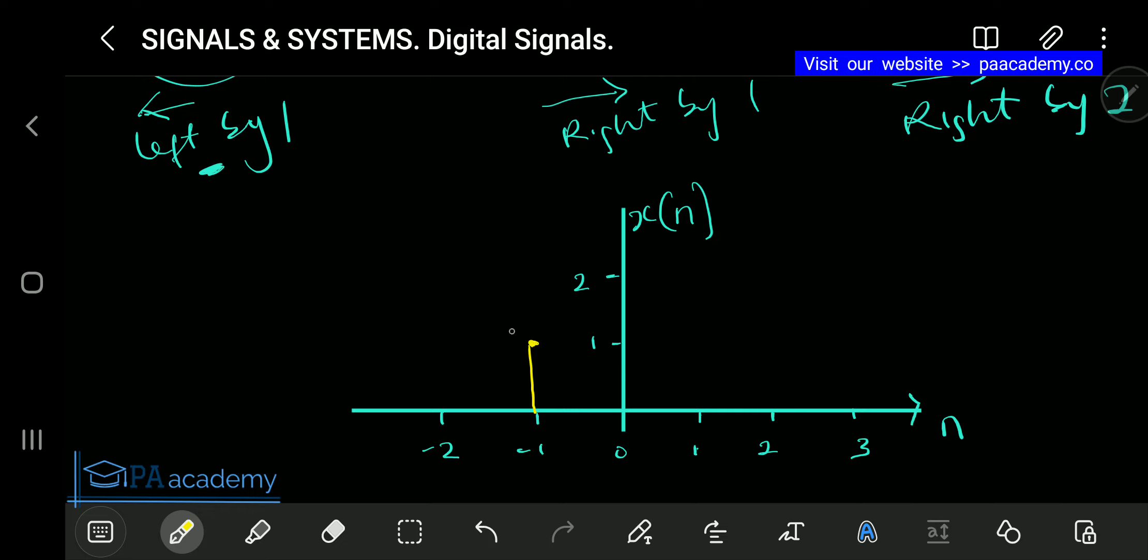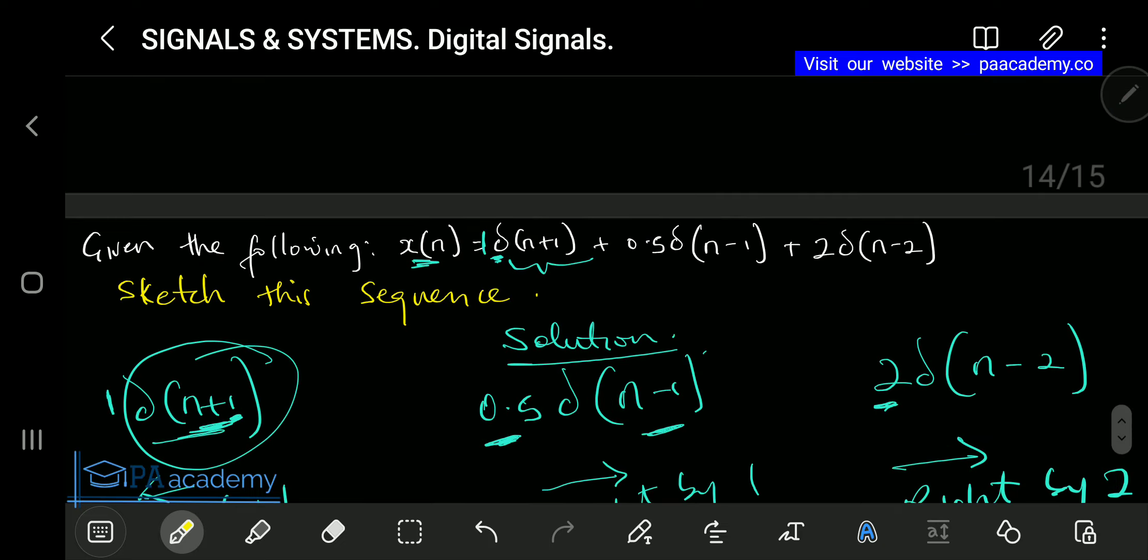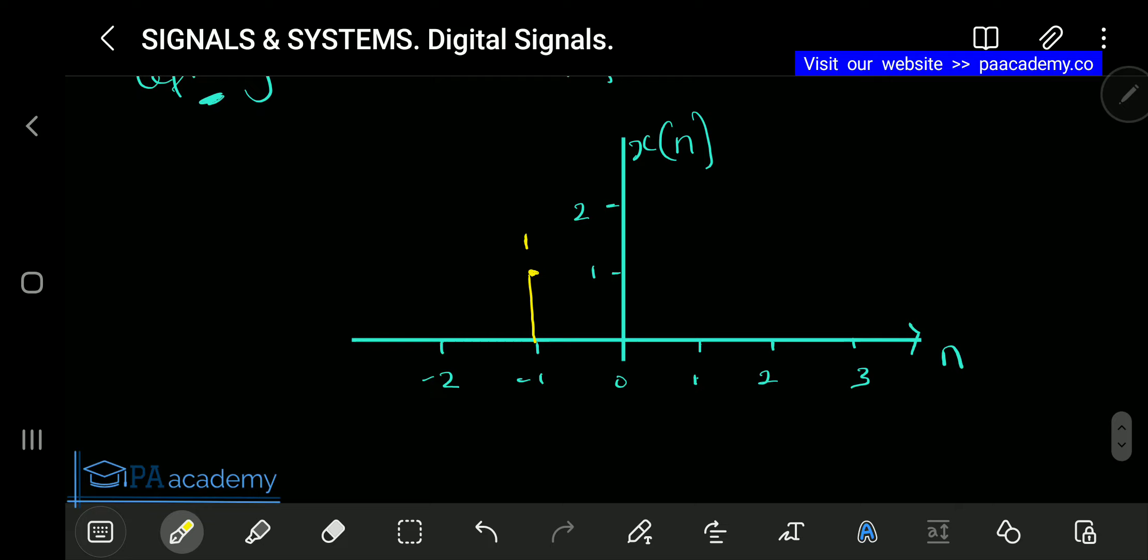Let's go to the next one. This is the next one. 0.5 is the amplitude, and that is n-1, that's going to be shifted to the right by 1 with a height of 0.5. So by 1, 0.5 will be somewhere here. So if you trace it like this, it should be 0.5. This is 0.5.